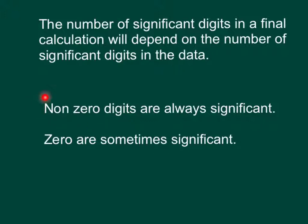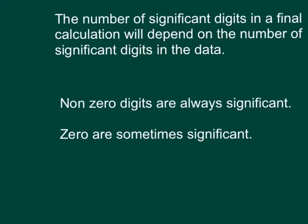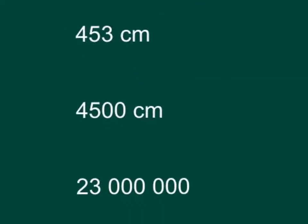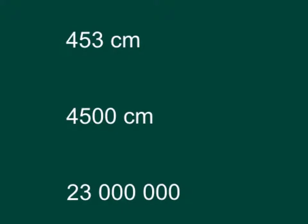What is significant? Non-zero digits — one to nine — are always significant. Zeros sometimes are and sometimes aren't. For example, 453: these are all non-zero digits, which means there are three sig digs.